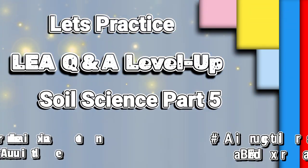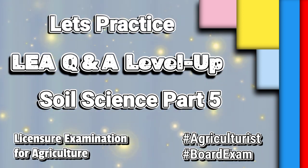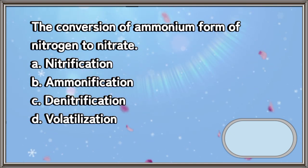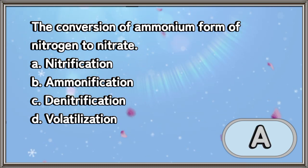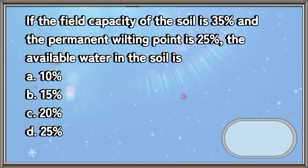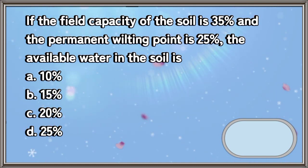Let's practice LEAH Q&A Level Up Soil Science Part 5. The conversion of ammonium form of nitrogen to nitrate: a) nitrification, b) ammonification, c) denitrification, d) volatilization. The answer is letter A. If the field capacity of the soil is 35% and the permanent wilting point is 25%, the available water in the soil is: a) 10%, b) 15%, c) 20%, d) 25%. The answer is letter A.